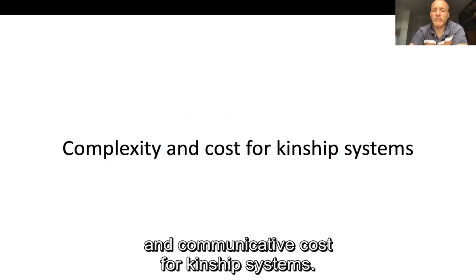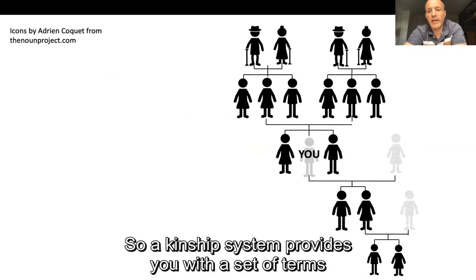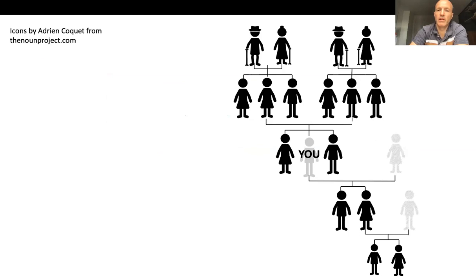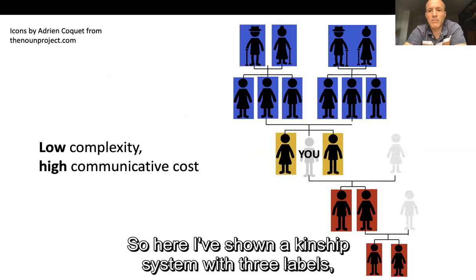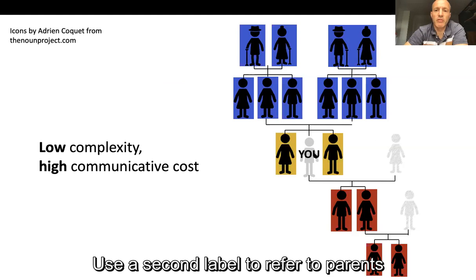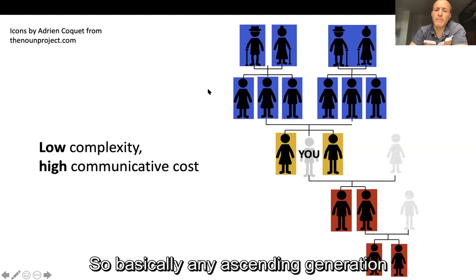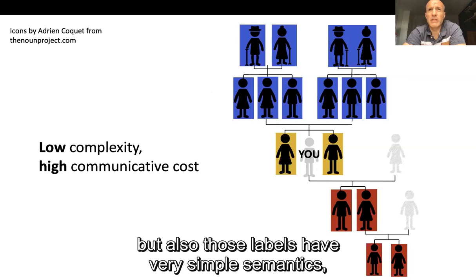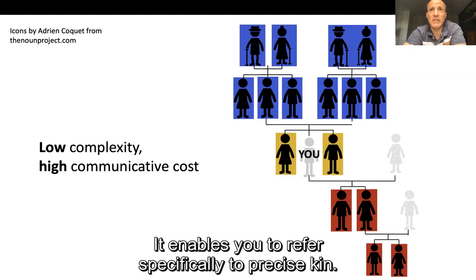A kinship system provides a set of terms for referring to kin — your siblings, your parents and their siblings, your grandparents, your children, your children's children, and so on. A very simple kinship system might use three labels: one for siblings, a second for parents, their siblings, and grandparents (any ascending generation), and a third for children, children's children, and any descending generation. This is clearly very simple with few labels and simple semantics, but it has high communicative cost — it doesn't enable you to refer specifically to precise kin.